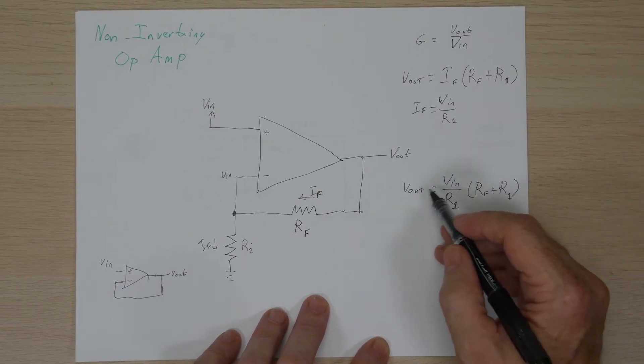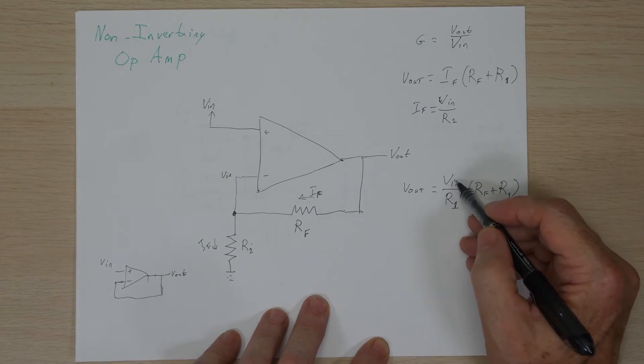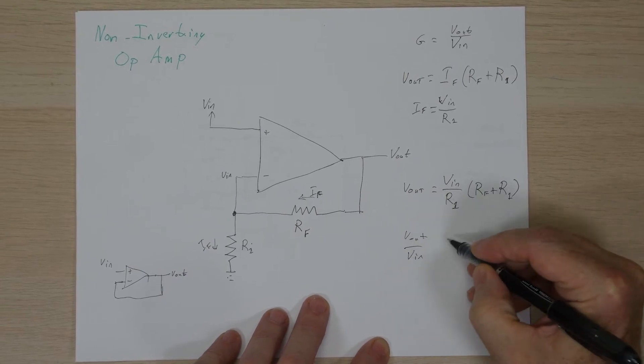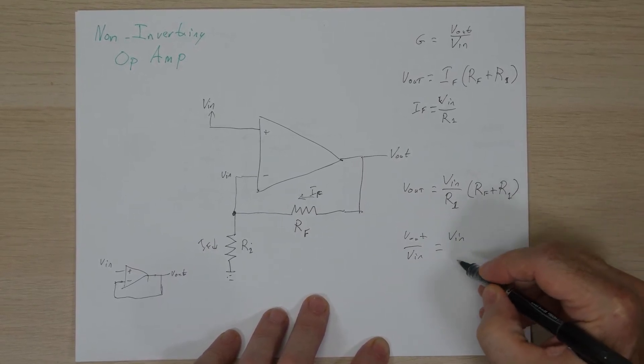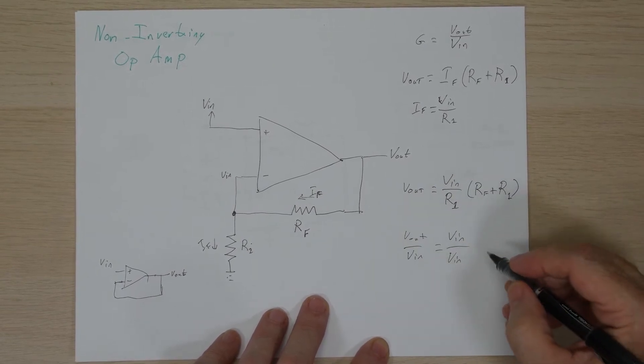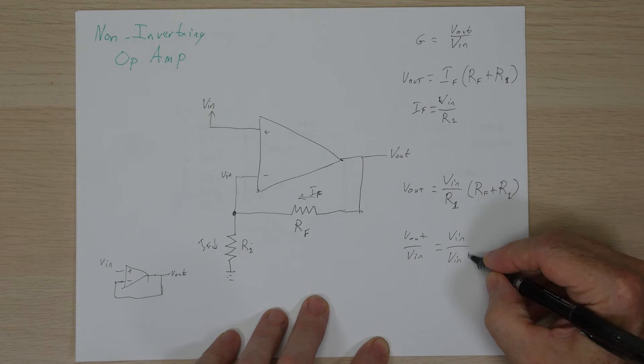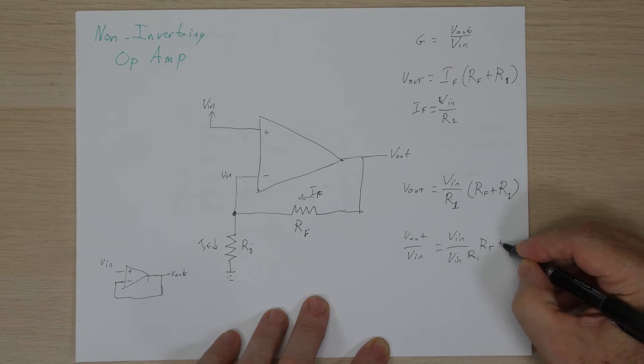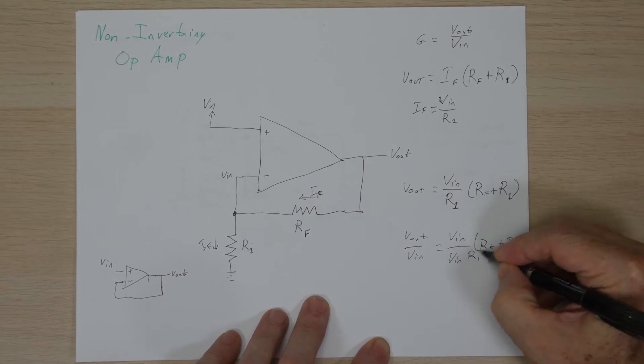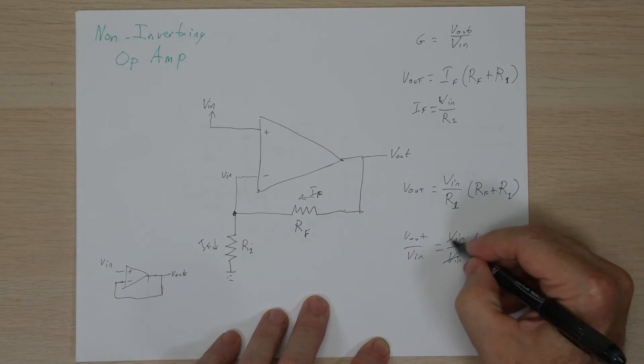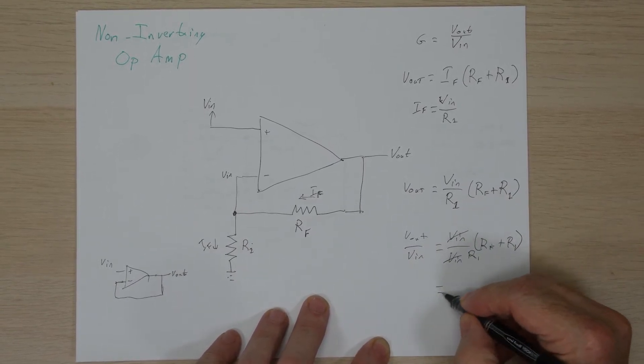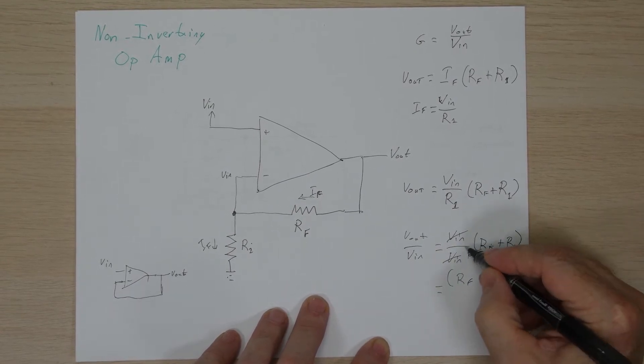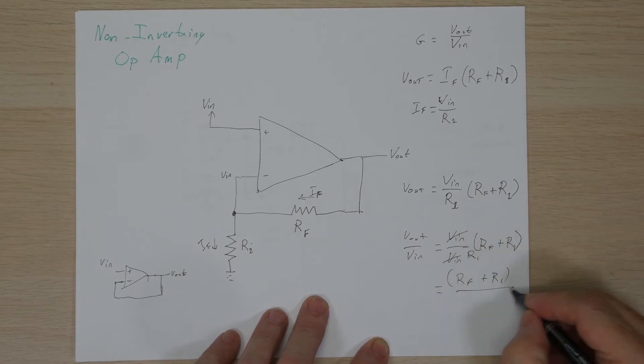We can see that the first thing we can do is we can divide both sides by V in to remove this term from this side. So if we do that, we get V out divided by V in is equal to V in divided by V in, we'll put it in the same place, R1, and then times RF plus R1. These two cancel out, and we end up with this being RF plus R1 divided by this bottom portion here, the R1.